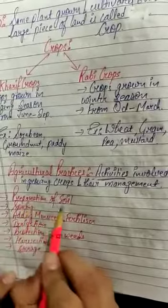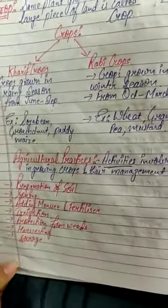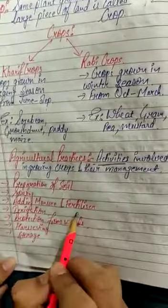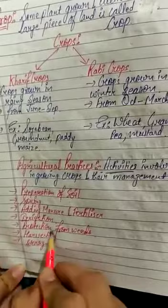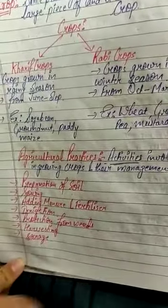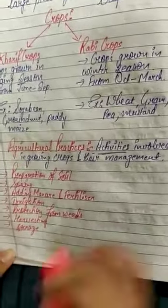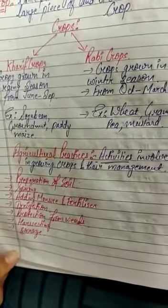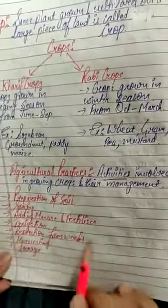So basically, agricultural practices are: first one is preparation of soil, sowing of the seeds, adding manure and fertilizers, irrigation, protection from weeds, harvesting, and storage. These are the basic agricultural practices. Now let us understand these in detail.